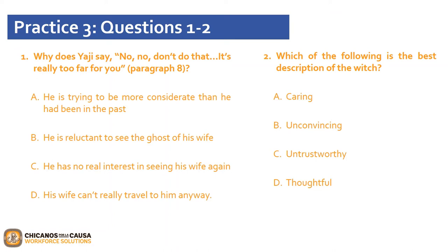Let's go ahead and review the following questions about our excerpt. Question 1 asks: why does Yashi say, 'No, no, don't do that. It's really too far for you'? Is it A, he is trying to be more considerate than he had been in the past? B, he is reluctant to see the ghost of his wife? C, he has no real interest in seeing his wife again? Or D, his wife can't really travel to him anyway? The correct answer is B, he is reluctant to see the ghost of his wife. The witch, supposedly speaking as Yashi's wife, says that she lies in her grave longing for Yashi to die and join her. She then asks, 'Shall I come to meet you?' Throughout the excerpt, Yashi seems uncomfortable, and you can infer that he is reluctant.